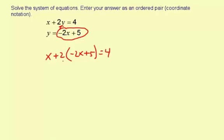So now I need to solve for x. I'm going to distribute this 2. x plus 2 times negative 2x is negative 4x. And then 2 times positive 5 is 10, so plus 10, and then equals 4.